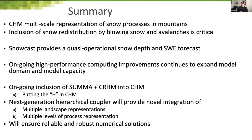In summary: CHM's multi-scale representation of snow processes in the mountains and inclusion of snow redistribution by blowing snow and avalanching is critical. Snowcast provides quasi-operational snow depth and SWE forecasts including blowing snow for large spatial domains at high spatial resolution, enabled through high performance computing improvements. Going forward, work is in progress within CHM for the hydrology, taking the next step to include more hydrological processes.